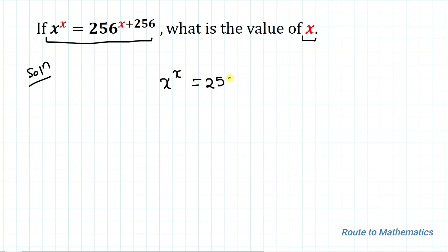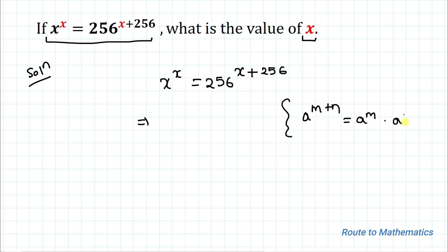We have given x to the power x equals 256 to the power (x plus 256). In the next step we'll apply an exponential law: a to the power (m plus n) can be written as a to the power m multiplied with a to the power n. So we can write x to the power x equals 256 to the power x multiplied with 256 to the power 256.